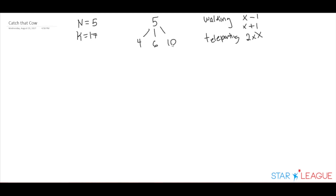One thing to note here is that in the next steps we can take, we can walk or teleport back to a spot we have already visited. We do not want to redraw these nodes, as we will get a tree that keeps repeating itself. So what we need is to create a visitor array that will keep track of all the spaces we have visited before, to make sure we do not go over the same place twice. Our visitor array should keep track that we have already visited locations 5, 6, 4, and 10.